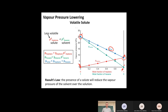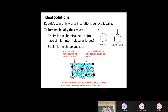Raoult's Law says that if you dilute some solvent, its vapor pressure will go down with its mole fraction. Raoult's Law works if solutions behave ideally — similar to how the ideal gas equation has assumptions about pressure and intermolecular forces, and real gases aren't perfectly ideal.